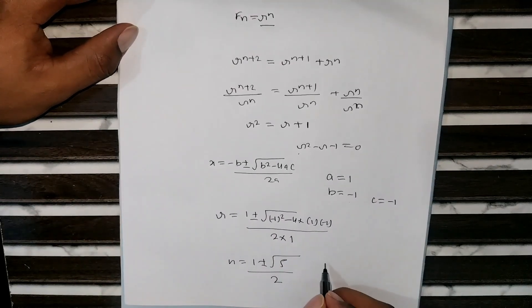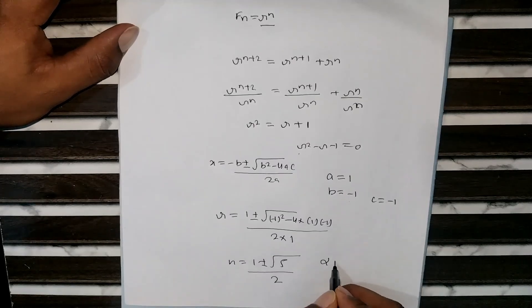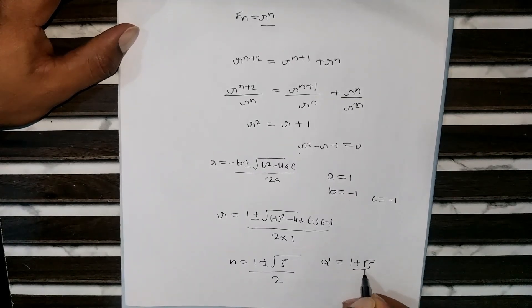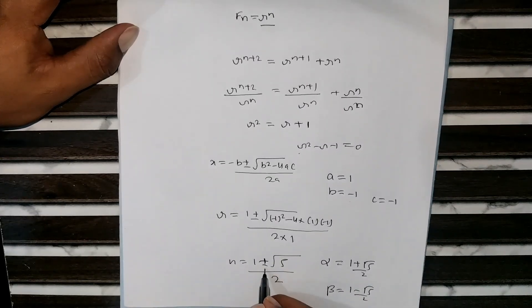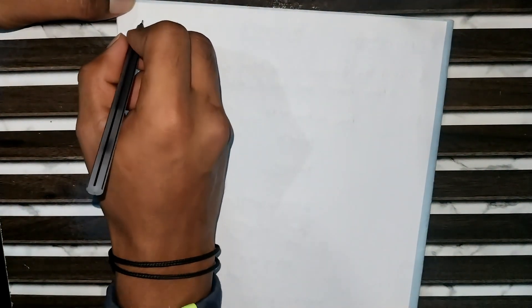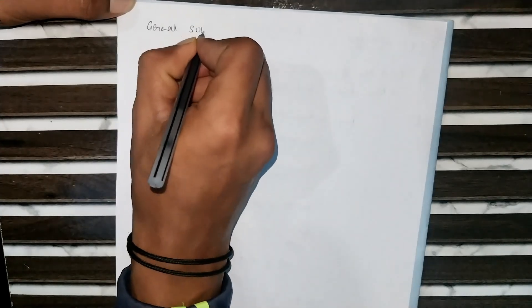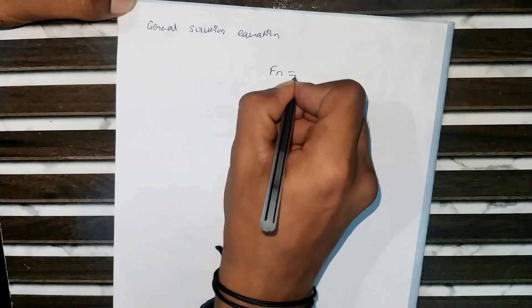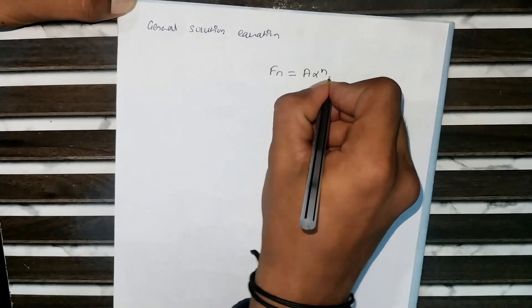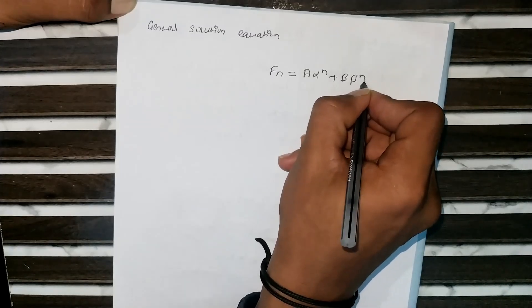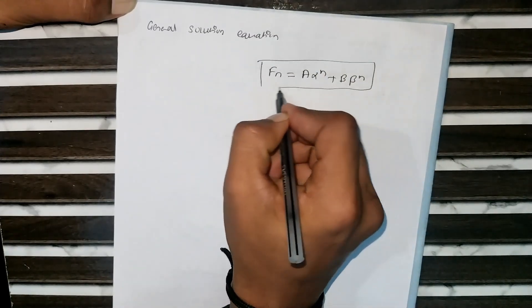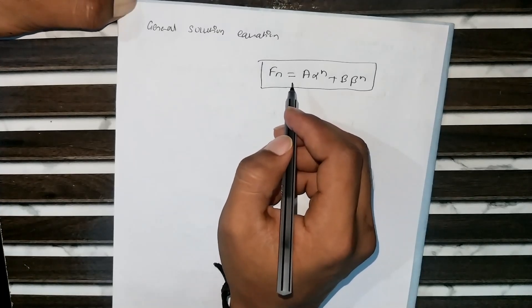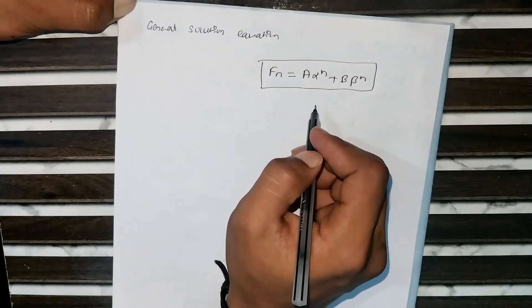There are two roots: α = (1 + √5) / 2 and β = (1 − √5) / 2, corresponding to the plus and minus signs. The general solution of the recurrence relation is f(n) = A·αⁿ + B·βⁿ, where A and B are constants to be determined from the initial conditions.